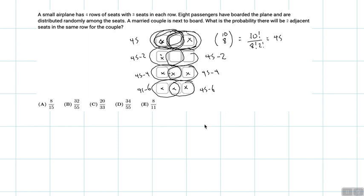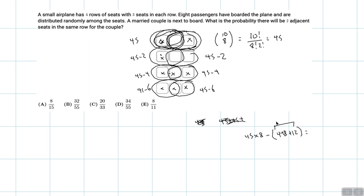So in total, summing this up: there are eight pairs of adjacent seats, giving us 45 times 8. Then subtracting all the double-counted cases: minus 2 minus 2 is 4, minus 4 minus 4 is 8, and minus 6 minus 6 is 12. So this is 45 times 8 minus 24, which is 360 minus 24, which is 336.